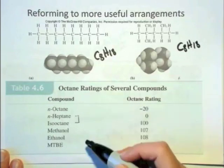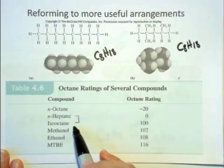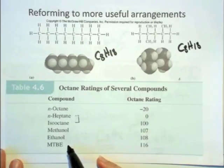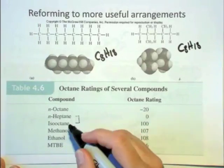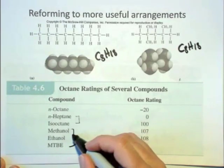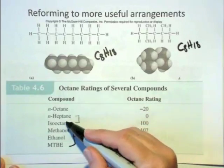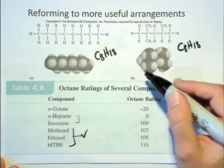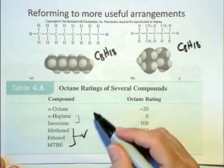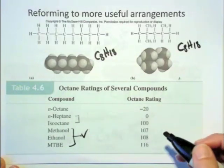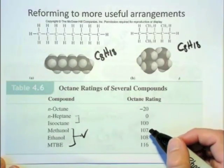So anyway, another thing that helps with the octane rating is methanol, ethanol, and methyl tertiary butyl ether. These are oxygenated compounds. Adding the oxygenated compound and having as much like isooctane type compounds in your liquid mixture that is petroleum will give you the best type of octane rating.